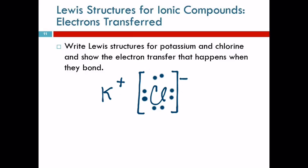Potassium transfers — gives — the electron to chloride. After chloride takes it, we've got a positive charge and a negative charge and now these guys become very attractive to each other and they're going to stick together.